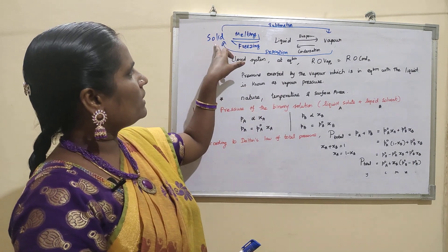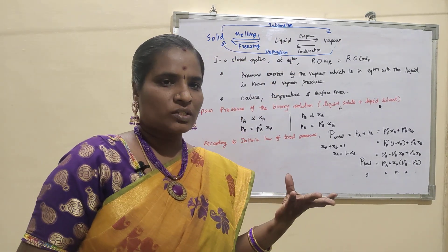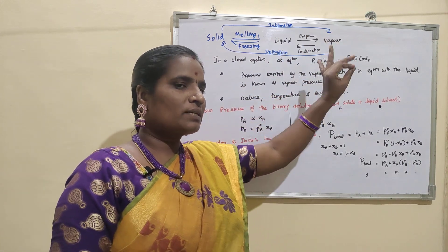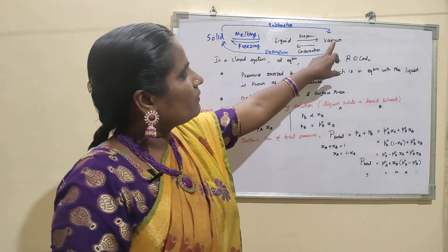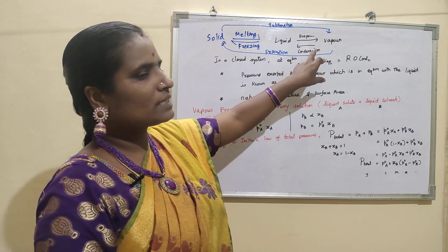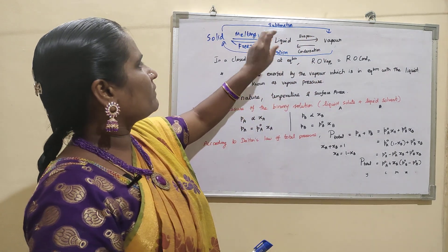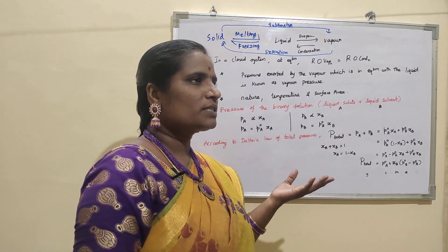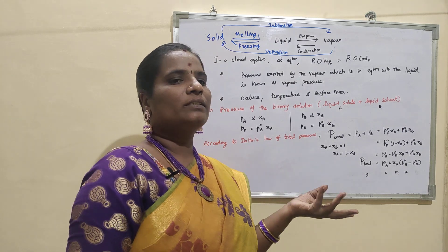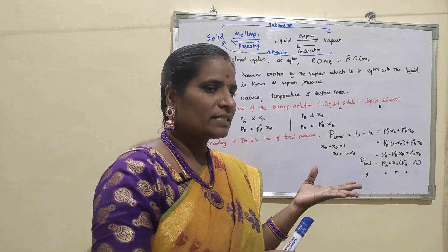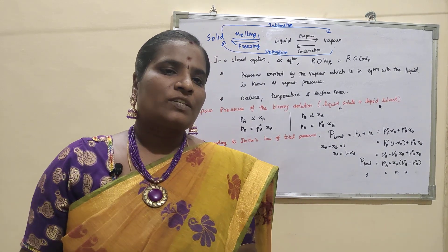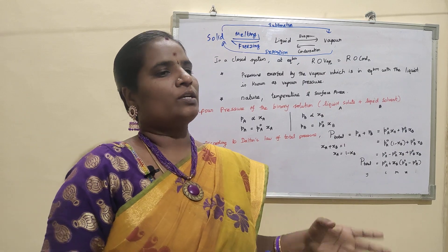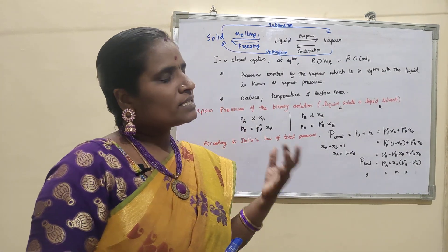When a solid goes to liquid, that phase transition is known as melting, and that temperature is known as the melting temperature. When liquid is converted to vapor, we call that process evaporation. When vapor comes back as liquid, that is condensation. When liquid becomes solid, that process is known as freezing. Camphor is an example of sublimation — solid camphor converts directly to the gaseous state. That process is sublimation, the phase transition from solid to gas. The reverse, gaseous phase to solid phase, is known as deposition.